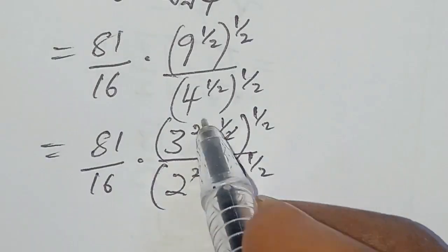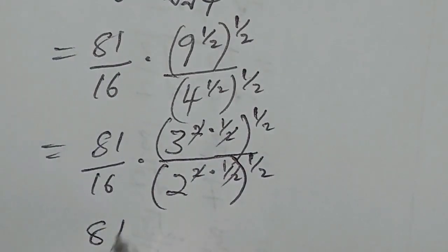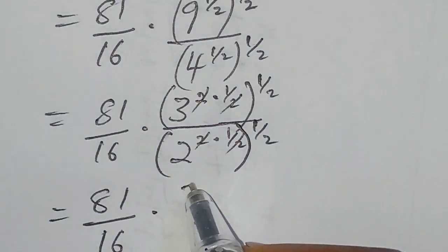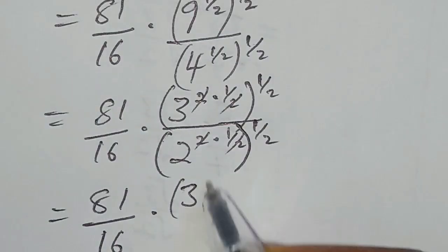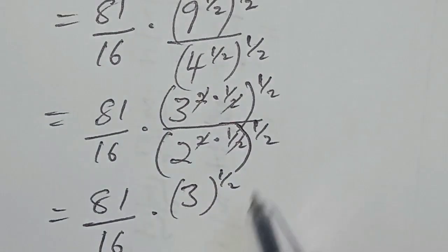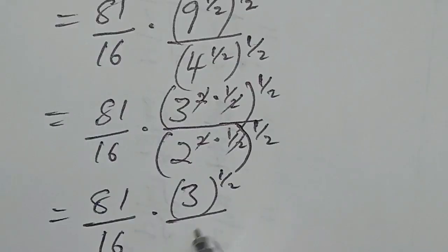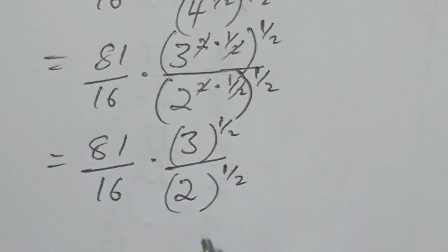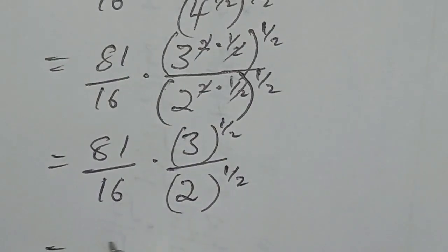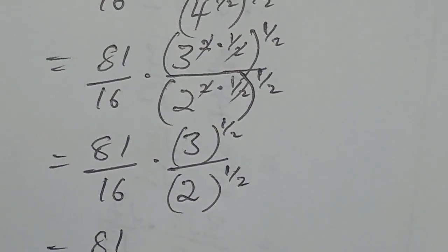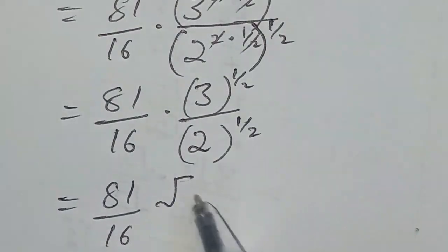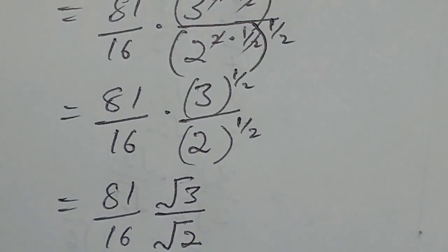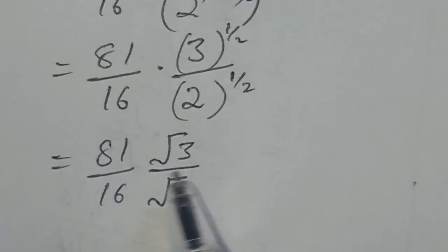After cancellation we now have 81 over 16 multiplied by 3 to the power of one half, over 2 to the power of one half. This can be written as 81 over 16 multiplied by the square root of 3 over the square root of 2.